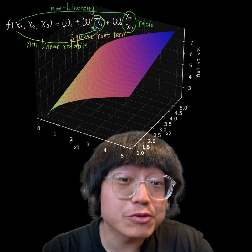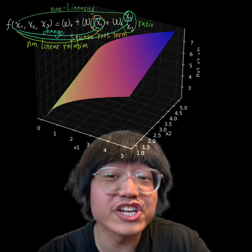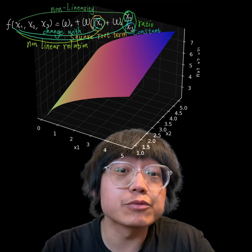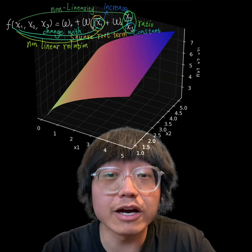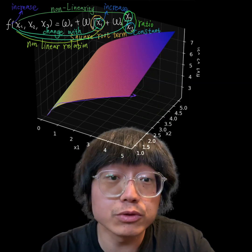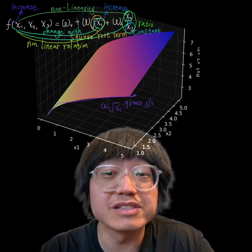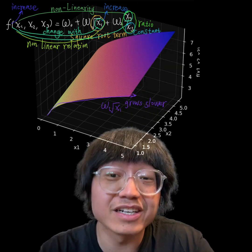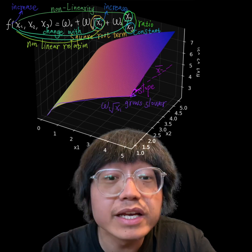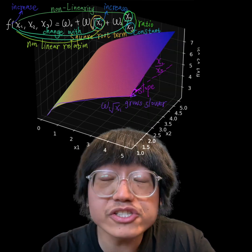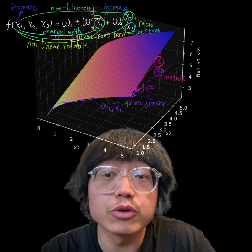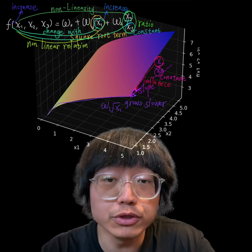This graph illustrates how the function changes primarily with x₁ and x₂, since we are assuming x₃ is a constant. The output increases as x₁ increases due to the square root transformation, which grows slower than a linear function. The division of x₂ by x₃ influences the slope with respect to x₂.